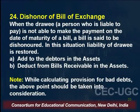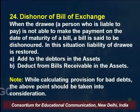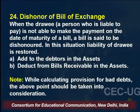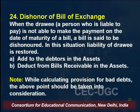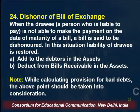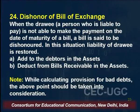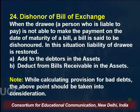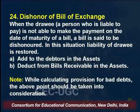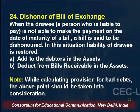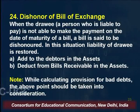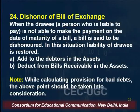The next adjustment entry is regarding dishonor of bill of exchange. When the drawee, a person who is liable to pay, is not able to make the payment on the date of maturity of a bill, the bill is said to be dishonored. In this case, debtors are increased and Bills Receivable (BR) is decreased. The dishonored amount will be added to debtors on the asset side of the balance sheet and deducted from bills receivable. This also needs to be considered while calculating provision for bad debts.